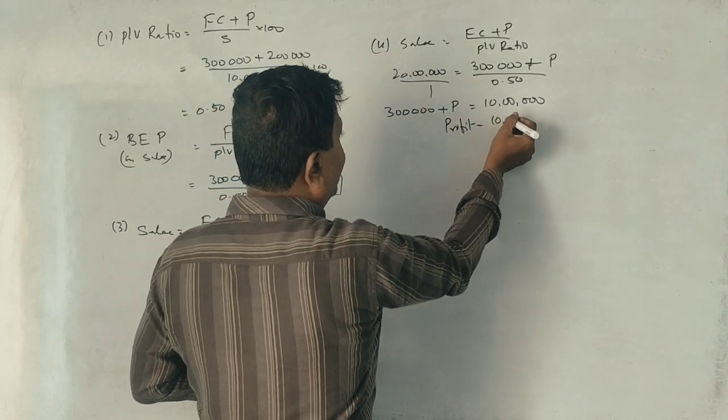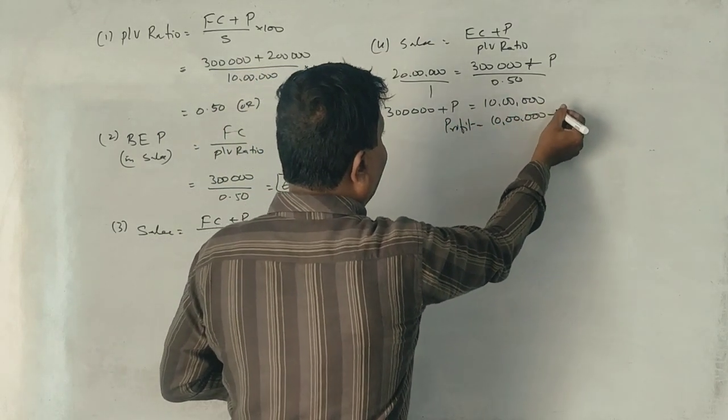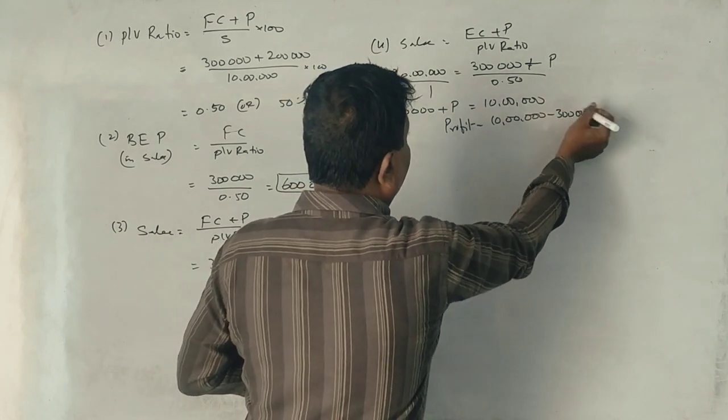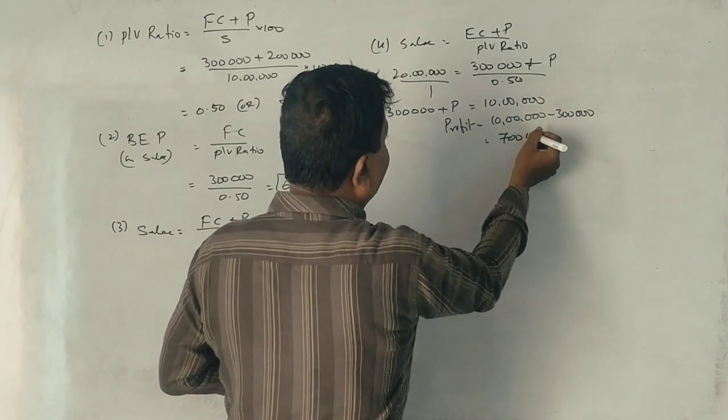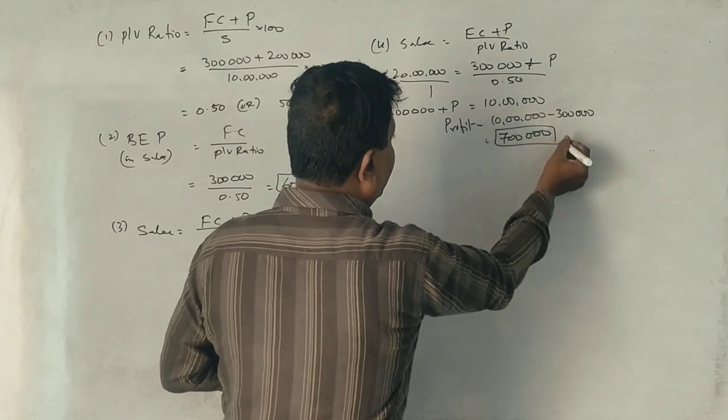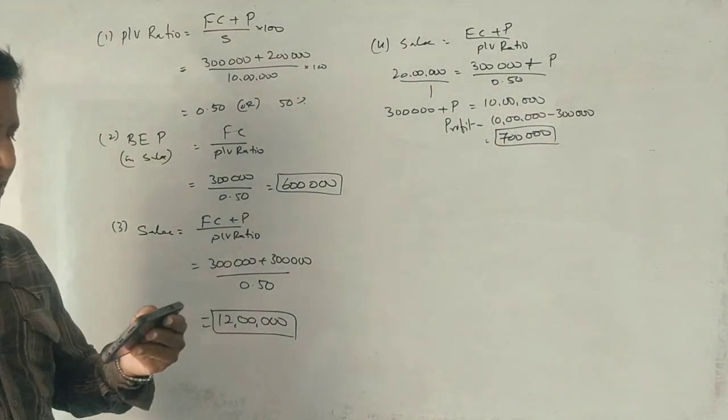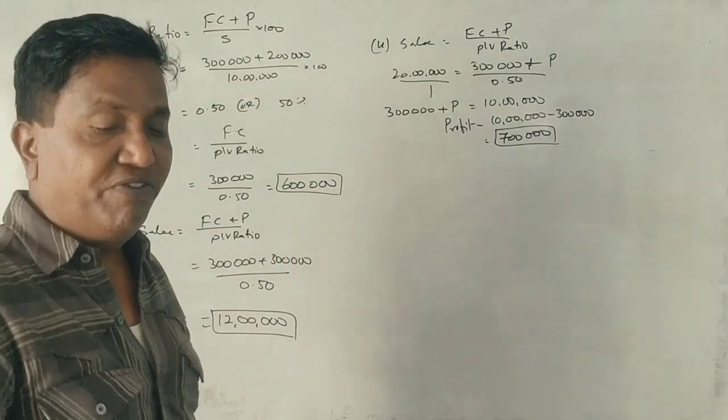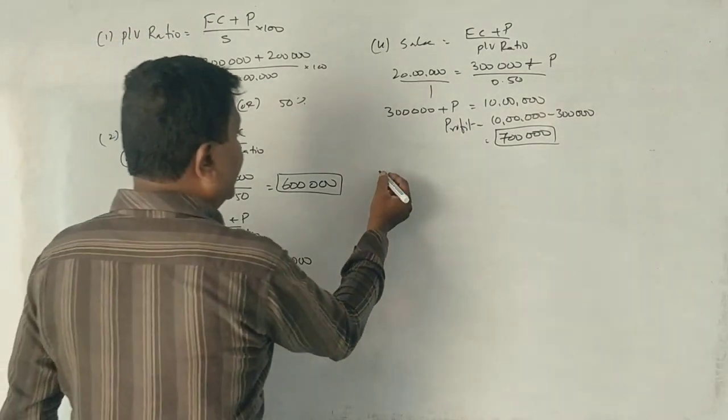P/V ratio is 0.50. So profit is equal to 10 lakhs. Profit is equal to 10 lakhs minus 3 lakhs is equal to 7 lakhs. Last question we answer.